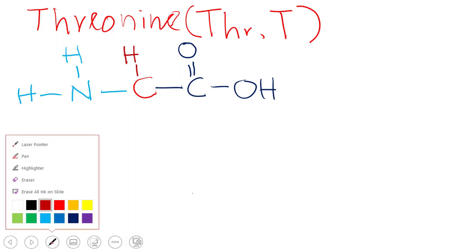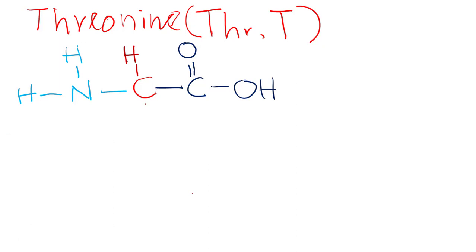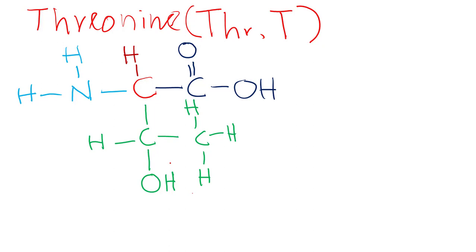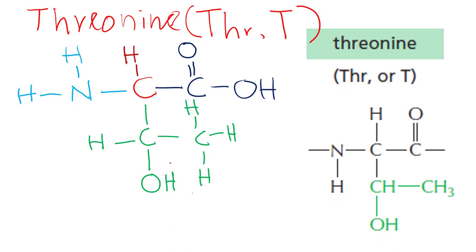Now its side chain is quite simple. As I just told you, this is an uncharged polar amino acid. So we have CH, to this CH we have CH3 and OH group. This is the structure - a simple one: CH, CH3, and then OH.